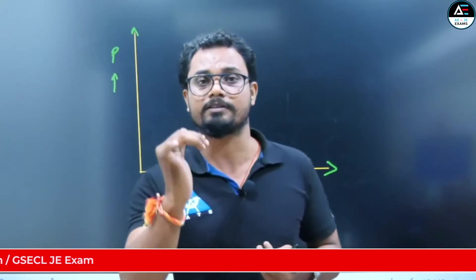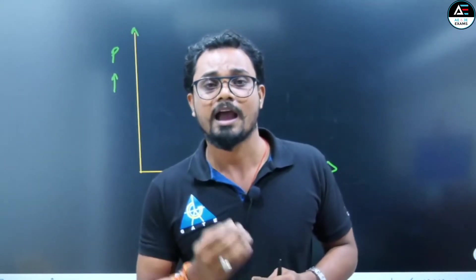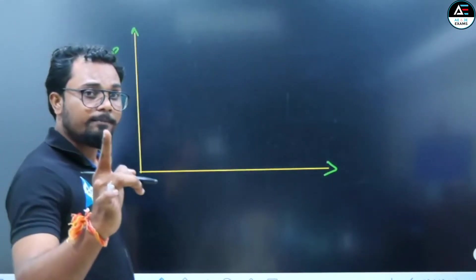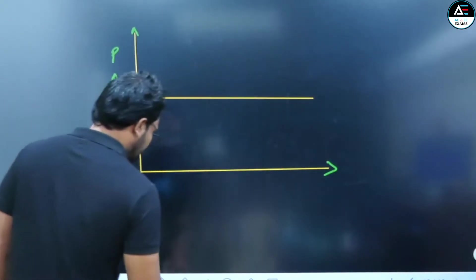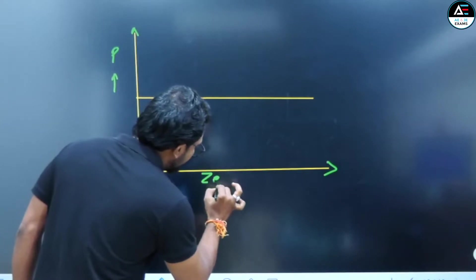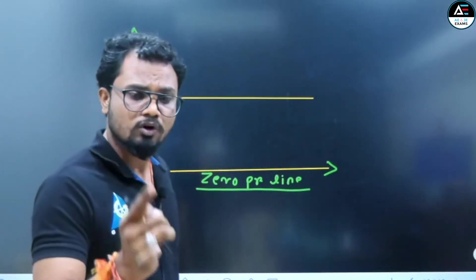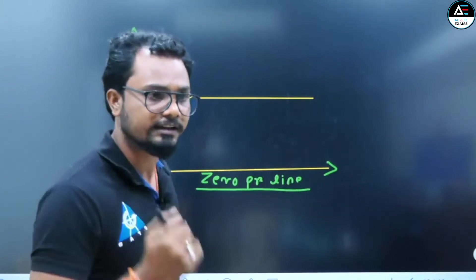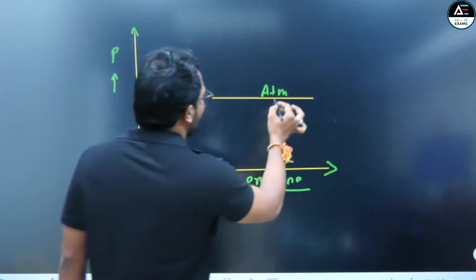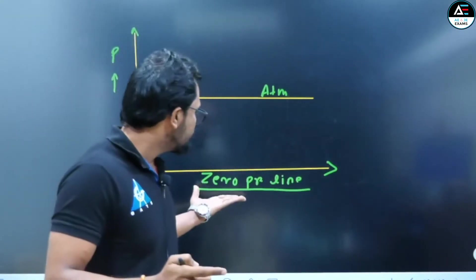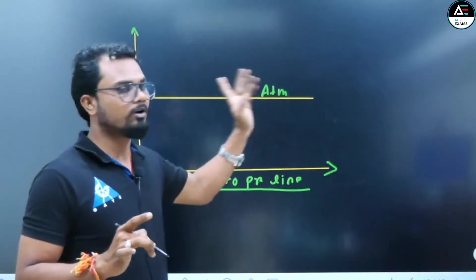We know that the pressure exerted by our environment is atmospheric pressure. So we have two reference points: one is the zero pressure line — starting from zero — and the second is the atmospheric pressure line, which is always above the zero pressure line. These are our two reference lines — zero pressure line and atmospheric pressure line.